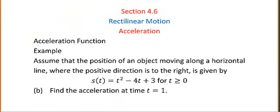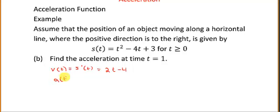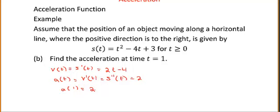Let's find the acceleration at t equals 1. The position is t squared minus 4t, so the velocity is the derivative of position, which is 2t minus 4. The acceleration is the derivative of velocity, or the second derivative of position, which is 2. So the acceleration at t equals 1 is 2, and in fact the acceleration for this object is always 2.